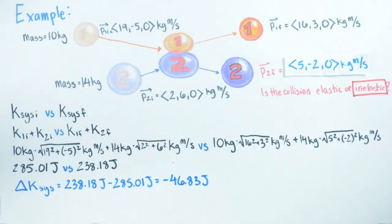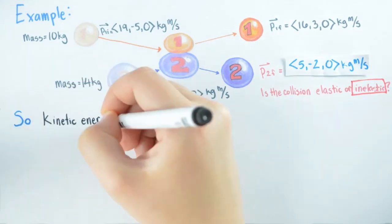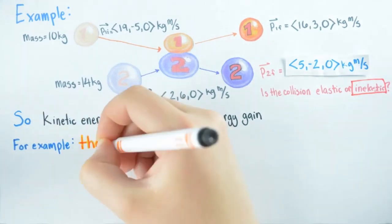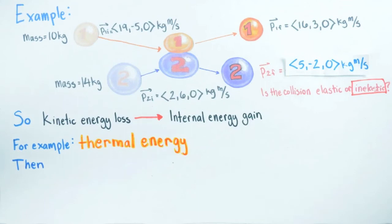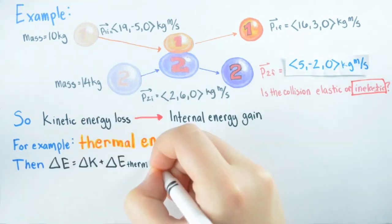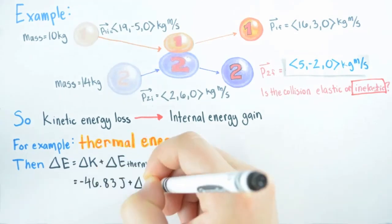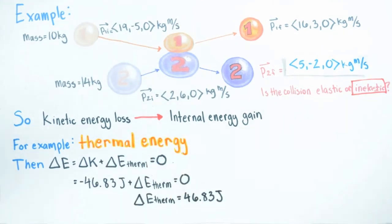So the collision is inelastic, which means the loss of kinetic energy shows up as a gain in the system's internal energy. Where that energy gain occurs depends on the specifics of the system. If we assume that the gain shows up as thermal energy, then our energy principle for this would be like this, and from this we can find that the increase in thermal energy is as shown.